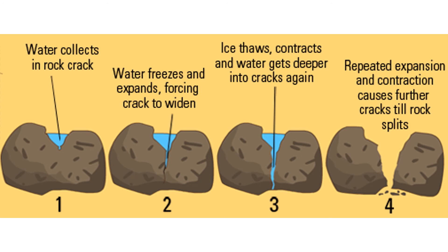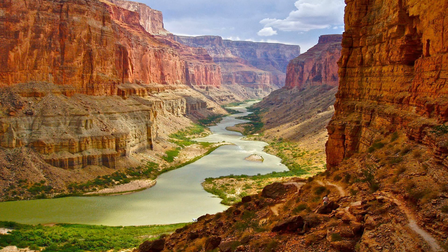Weathering and erosion occur very slowly — usually too slowly to observe with the naked eye. But we know they occur, and we can assume that they have always been occurring. Armed with this knowledge, we can make sense of the world around us. The landscapes on Earth, the rocks and fossils themselves, have been shaped over time by processes that still occur today. Why do canyons contain rivers? Because rivers are agents of weathering and erosion — they break down rock and transport fragments away. Over time, they cut down into rock and create canyons. Some rivers have been carving canyons for millions of years.